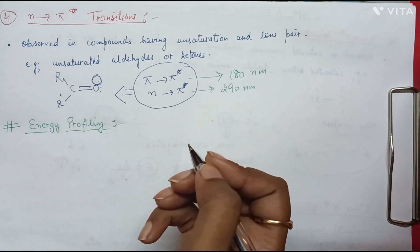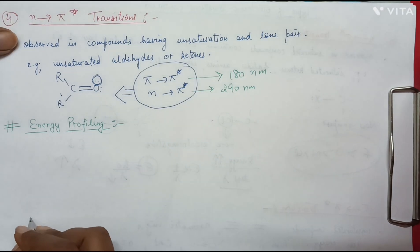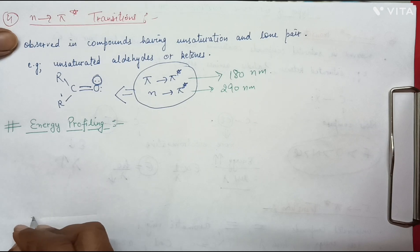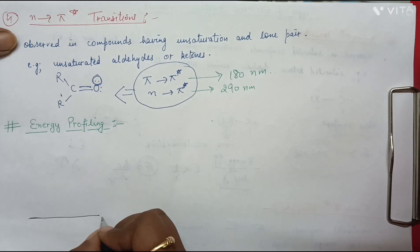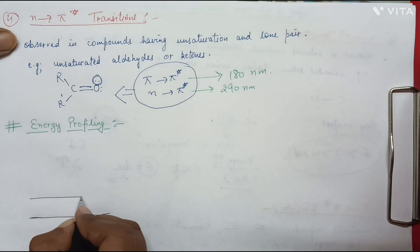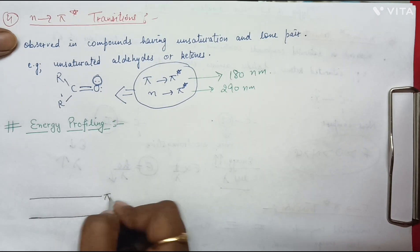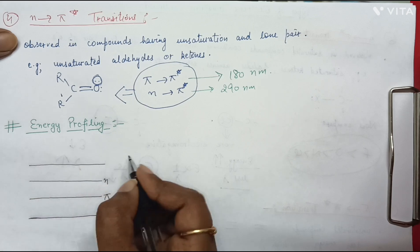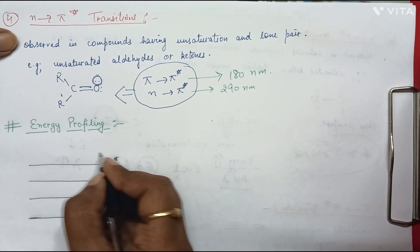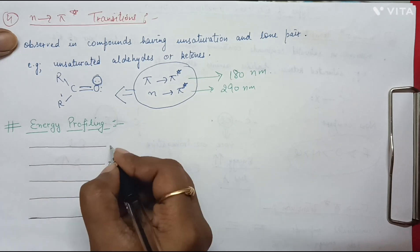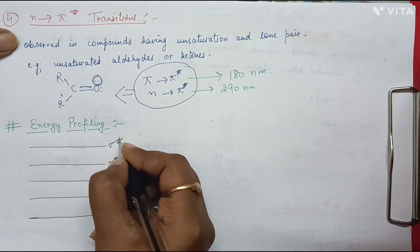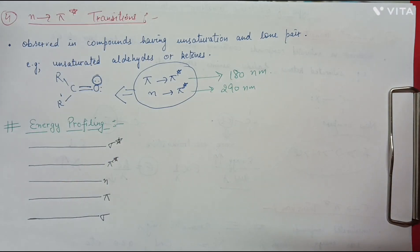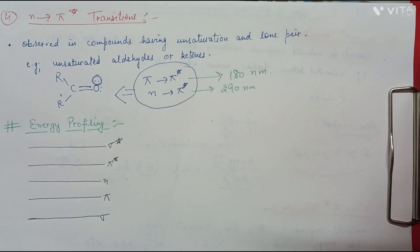If we look at the energy levels of molecular orbitals, we have sigma, pi, then non-bonding (n), then pi star, and sigma star. These are the energy levels of the molecular orbitals.